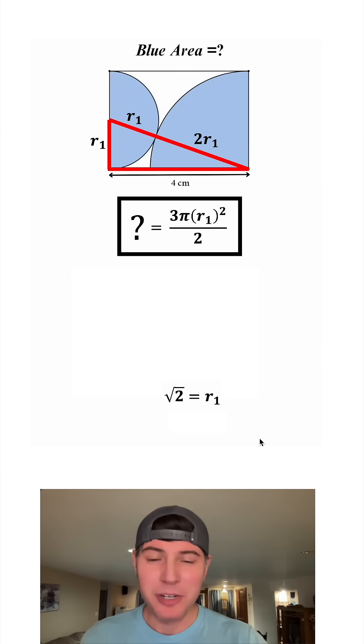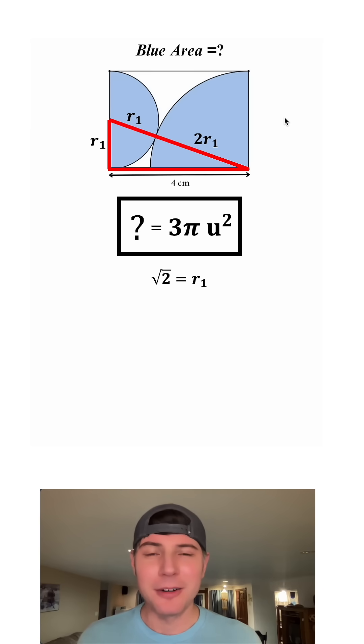That is exactly what we needed to know. Now in the place of r sub 1, we can plug in square root of 2. The square root and the square cancel each other out, and the 2 on top and bottom also cancel. So the answer to our question is 3 pi units squared. That's the blue area. How exciting.